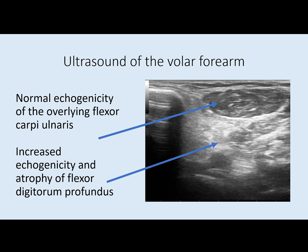This is the ultrasound that was done of his left forearm, and you can see he has a very normal-appearing flexor carpi ulnaris with normal echo intensity, but he has very markedly increased echo intensity of the underlying flexor digitorum profundus.